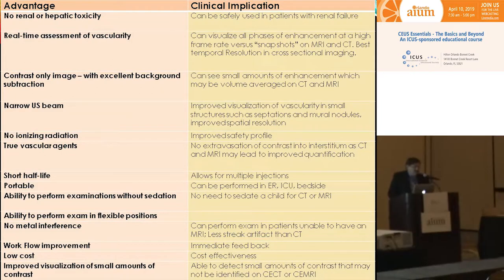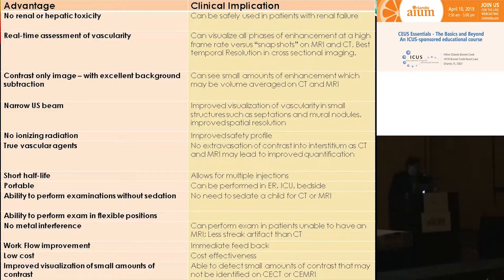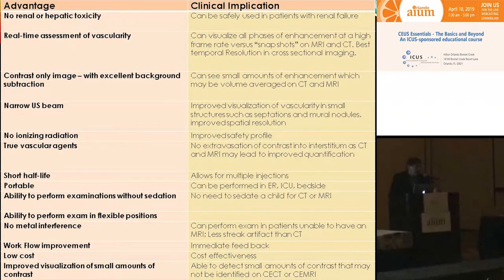The advantages of ultrasound contrast include: no renal or hepatic toxicity, so we can use these safely in patients with renal failure or renal obstruction. It's a real-time assessment of vascularity — we can visualize all phases of enhancement at a very high frame rate versus the snapshots we see in MR and CT. We have the best temporal resolution in cross-sectional imaging, which is very important in liver lesions like FNH, where we always see the spoke-wheel appearance that we often miss on CT and MR because of timing.